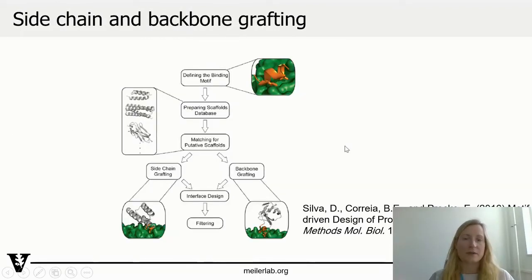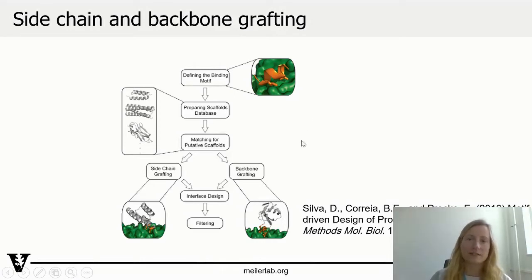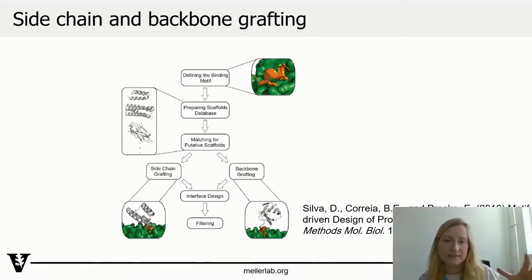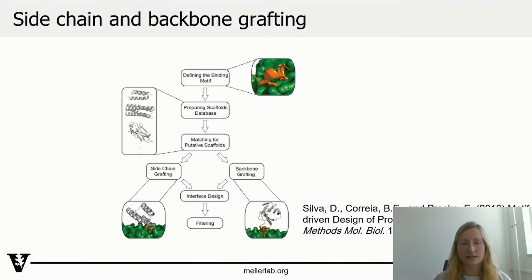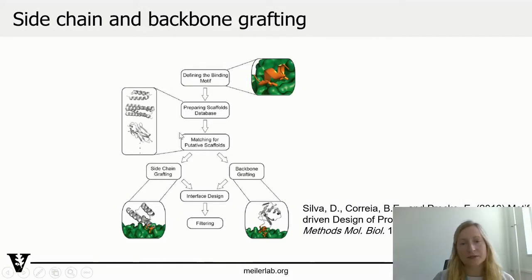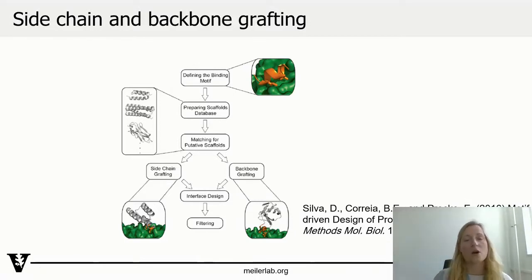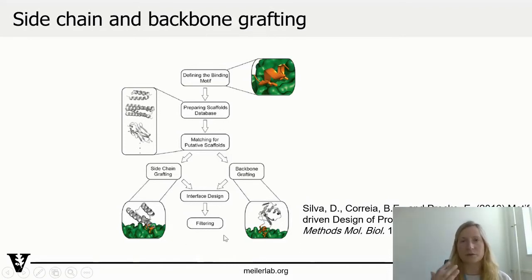Talking about sidechain and backbone grafting, you can see a basic workflow of these protocols. We have to define a motif in the context of another protein — the binder is the context of the motif. In this case it's a little peptide binding to the estrogen receptor alpha. In both protocols, you're also going to be using a scaffold database — this is what you're going to be grafting onto. A very important step is matching the scaffold backbones. Then it's either sidechain grafting, where you only transplant hotspot residues, or backbone grafting, where you take the whole stretch of backbone and incorporate it into the scaffold. In both cases, scoring, filtering, and redesigning are necessary afterwards.